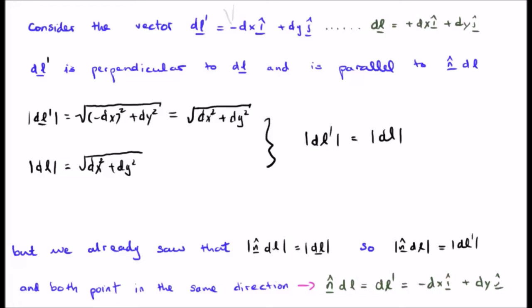The point is this. We already saw that N hat DL, the magnitude of that, is equal to the magnitude of DL. But so is the magnitude of DL equal to DL prime.